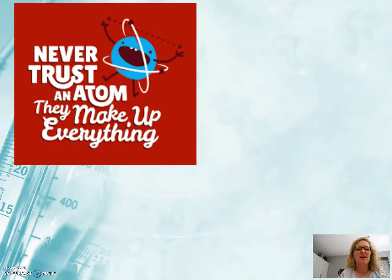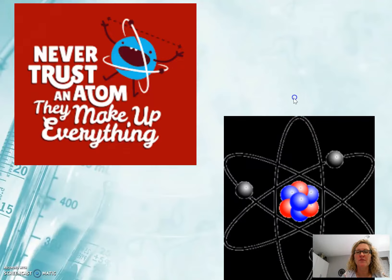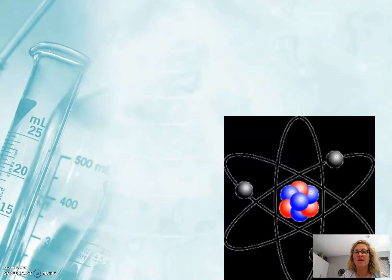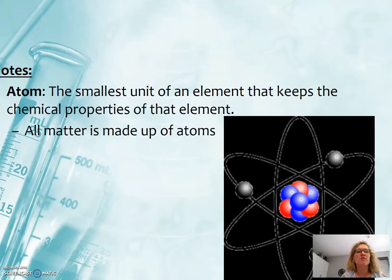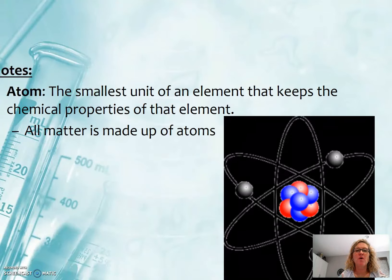Atoms make up everything, which is very important in chemistry. We have a model of an atom that helps us understand it. This model has been in use for quite a while and shows the parts of the atom and how they're arranged. Atoms are so tiny you can't see them with your eye or even with a microscope, so we use a model to understand them. The smallest unit of an element that keeps the properties of that element is called an atom, and there are many different kinds of atoms on the periodic table.